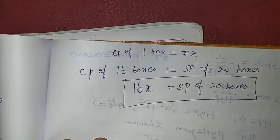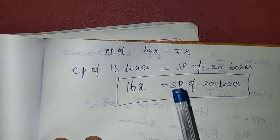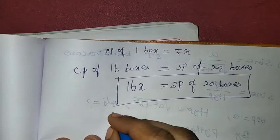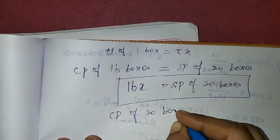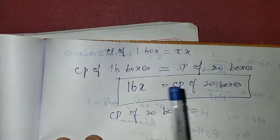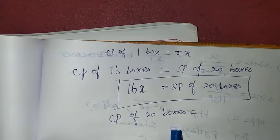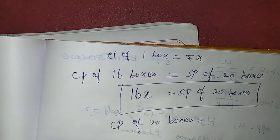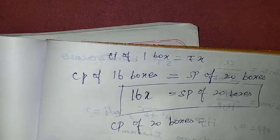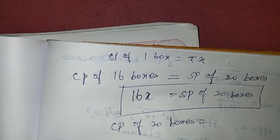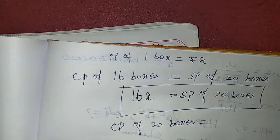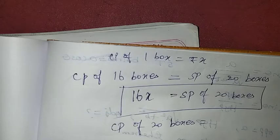We look at SP of 20 boxes and CP of 20 boxes. You can compare them to find gain or loss — just as you would compare cost price of 1 unit and selling price of 1 unit, since they must be in the same unit.